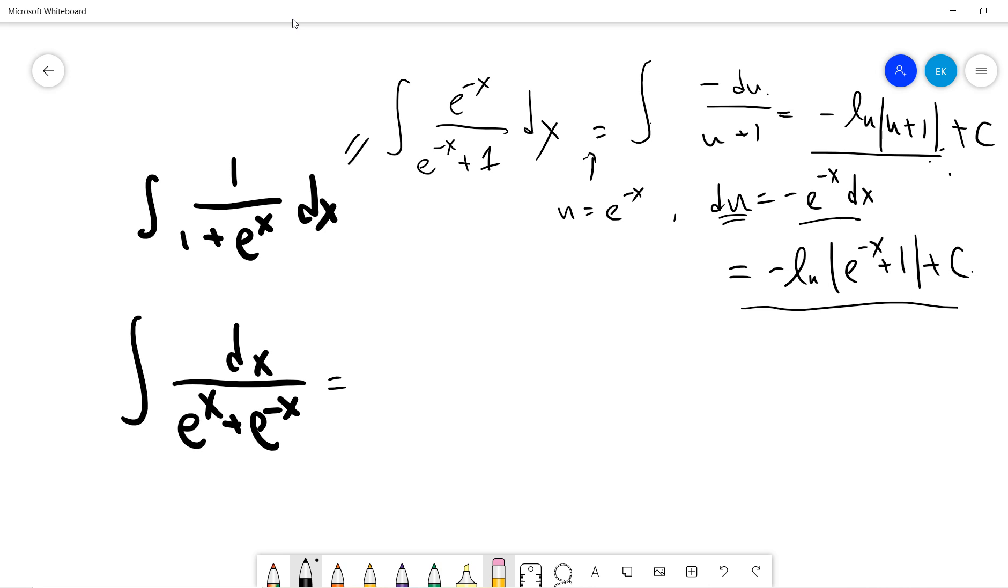Okay, so the second one. Second one also uses the same trick. We can multiply by exponential x, so it becomes exponential x squared plus one, exponential x dx. So the same trick.